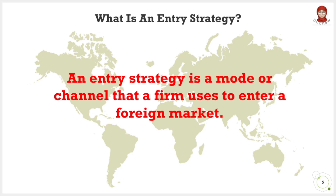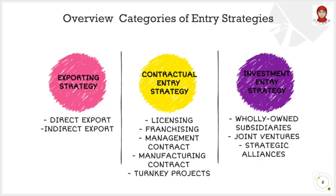There are many entry strategies available to choose. There are three main categories, which are exporting, contractual, and investment. Under exporting strategy, there are direct and indirect export. Under the contractual entry strategy, there are licensing, franchising, management contract, manufacturing contract, and turnkey project. And for investment entry strategy, there are wholly owned subsidiary, joint venture, and strategic alliances.